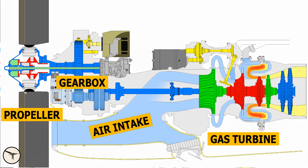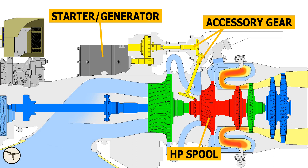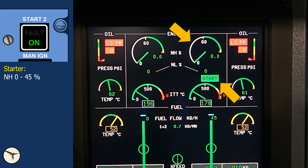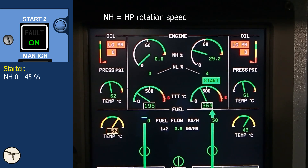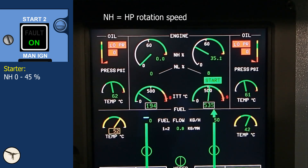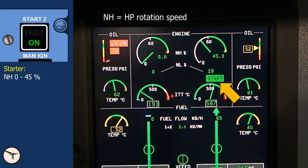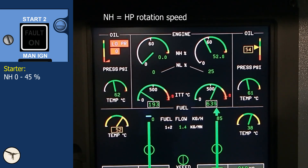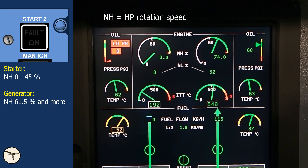For those of you who are not familiar with the ATR, I will explain how the engine starter works. It is a combined electrical starter and generator connected with a shaft to the high pressure spool of the gas turbine — that is the heart of the engine. When you press the starter button, it acts as a starter. When the rotation speed of the high pressure spool reaches 45% — that is called NH — the starter disconnects, and the engine completes the start sequence under its own power.